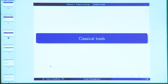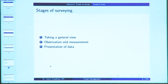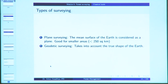Survey is the act of making measurement of the relative position of natural and man-made features on the earth surface and presentation of this information either graphically or numerically. You take measurements and you also have to present this data either graphically or numerically. There are three stages of surveying: taking a general view or the reconnaissance survey, observation and measurement, and presentation of data.